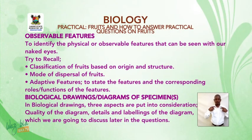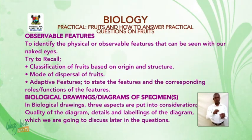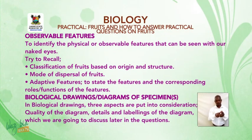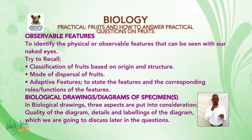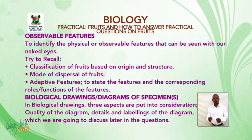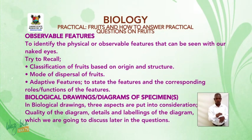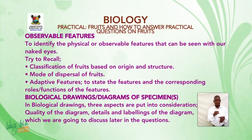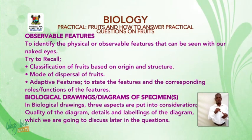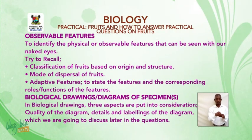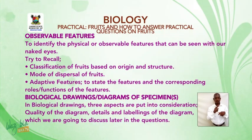Observable features: Identify the physical or observable features that can be seen with our naked eyes. Try to recall classification of fruits based on origin and structure. Consider the mode of dispersal of fruits and adaptive features — state the features and their corresponding roles or functions. For biological drawings or diagrams of specimens, three aspects are put into consideration: quality of the diagram, details, and labelings, which we will discuss later.